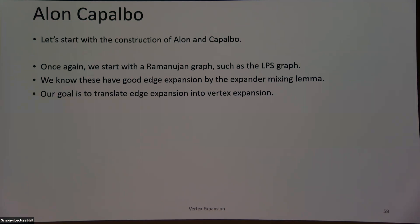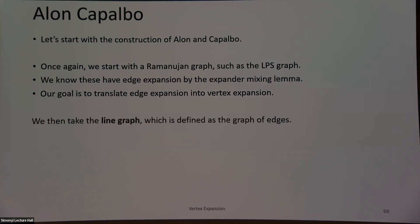Let's talk about this result, but first let's talk about the result of Alon and Capalbo. We start with the LPS graph, and since these are optimal spectral expanders they have good edge expansion. What we want to do is translate edge expansion into vertex expansion. The really smart idea was: let's just change our edges into vertices. Then hopefully our edge expansion will translate into some kind of vertex expansion. Specifically, we're taking the line graph: create a vertex corresponding to each edge, and connect two vertices in the line graph if there's a shared vertex between the two edges.